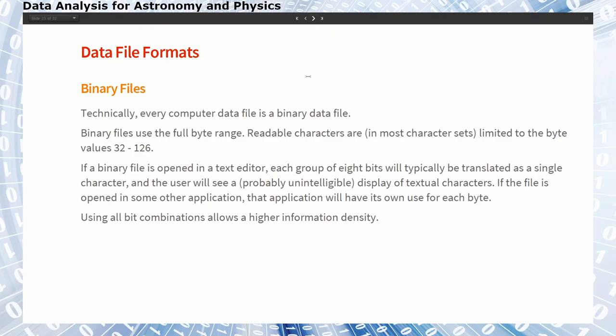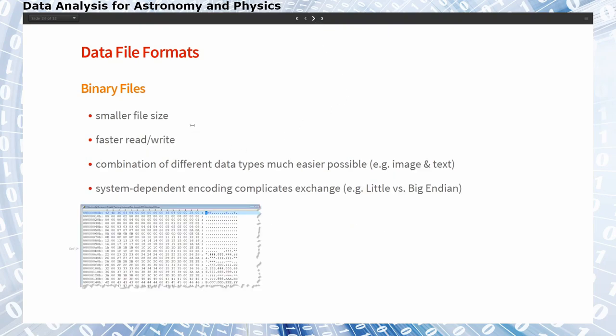An advantage of binary files is that the information content is higher because they use the full 8-bit space. With a lower number of bits, you can include a higher information density, which makes it very rapid in reading in and writing out. As an additional result, they also usually have smaller file sizes, and it's much easier to combine different data types within a single file, for example text and images.